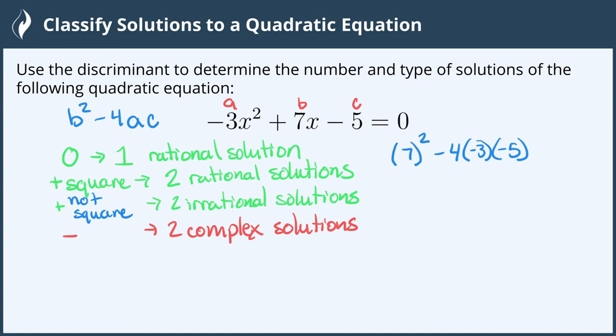7² is 49. -4 times -3 is positive 12, and positive 12 times -5 gives us -60. So we have 49 - 60, which gives us -11.